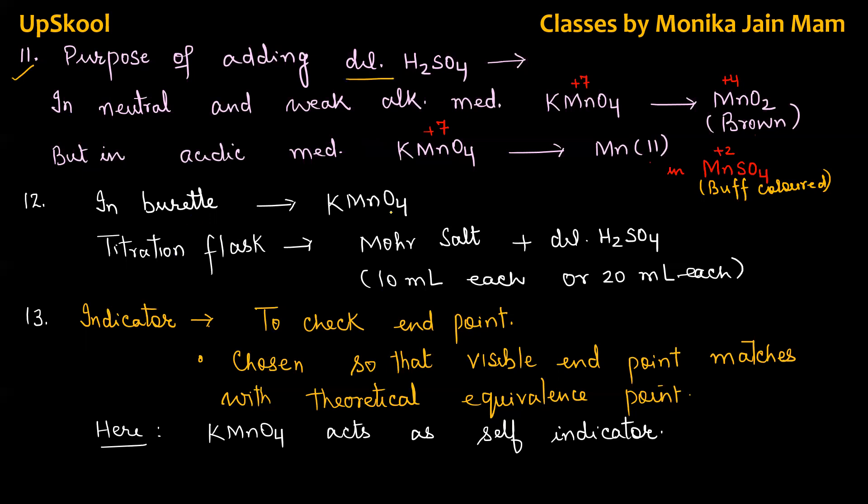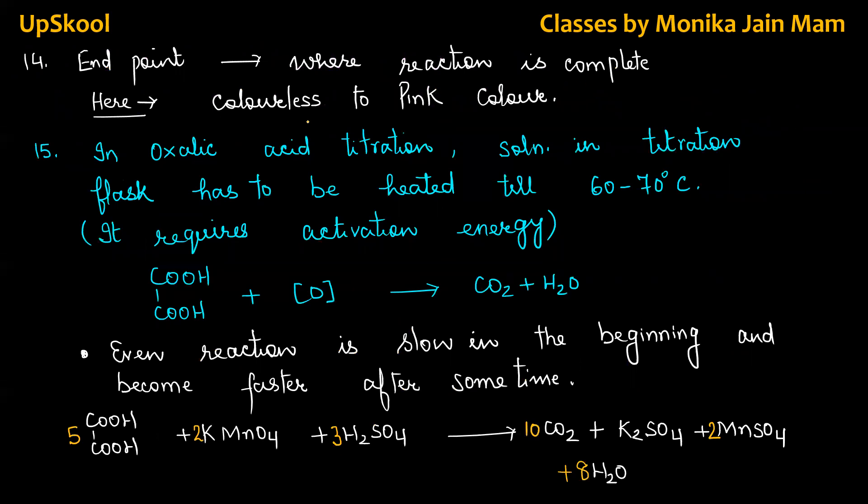Now in burette what we take? Potassium permanganate. And titration flask, mohr salt plus dilute sulfuric acid. So if the pipette is of 10 ml, 10 ml each and in some of the schools pipette is 20 ml, then will be 20 ml each. And if we do oxalic acid titration, then titration flask will contain oxalic acid and dilute sulfuric acid. Now generally we talk about in titration indicator, what is its role to check end point. It should be chosen in such a way that visible end point matches with theoretical equivalence point. Here potassium permanganate acts as self indicator. No external indicator is added. End point where reaction is complete and here it is colorless to pink color. So potassium permanganate will impart pink color when the redox reaction is complete.